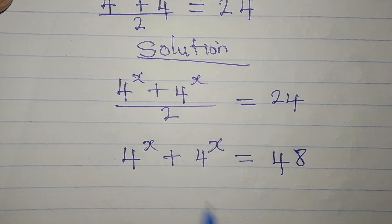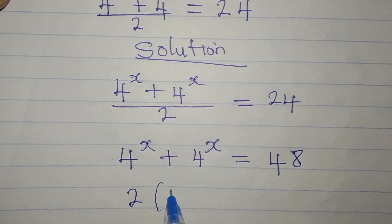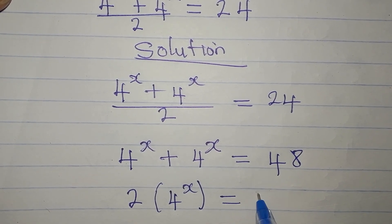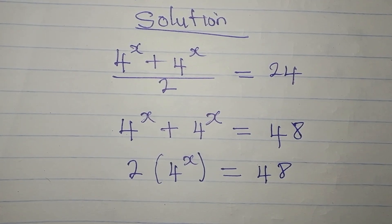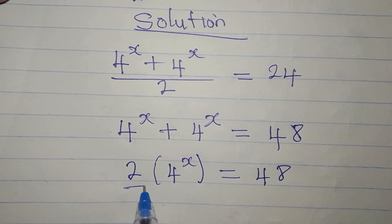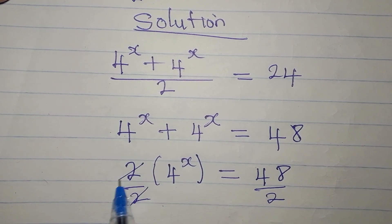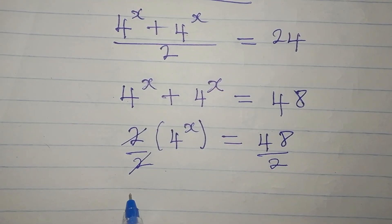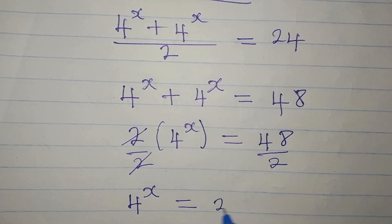Now we can add these two terms here to get 2 times 4 to the power of x, and it's equal to 48. So we simply divide both sides by 2 — this goes with this — then we have 4 to the power of x equal to 24.